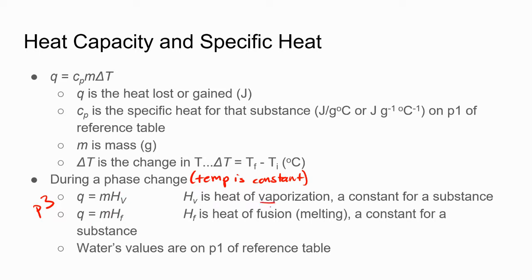Hv stands for vaporization — going from a liquid to a gas. Hf, where F stands for fusion, is where students get confused: it is actually for melting, the phase change from a solid to a liquid. We are only going to calculate this for water, whose Hv and Hf values are given in the middle of page one of our reference tables.